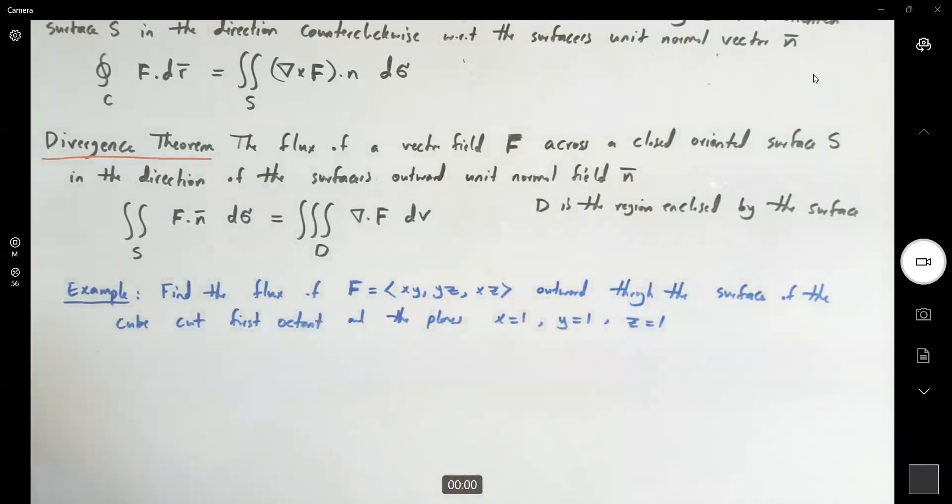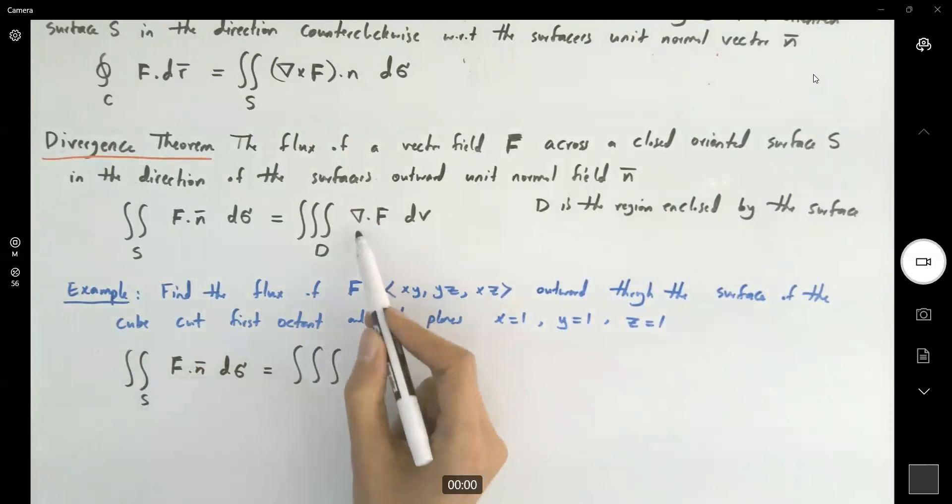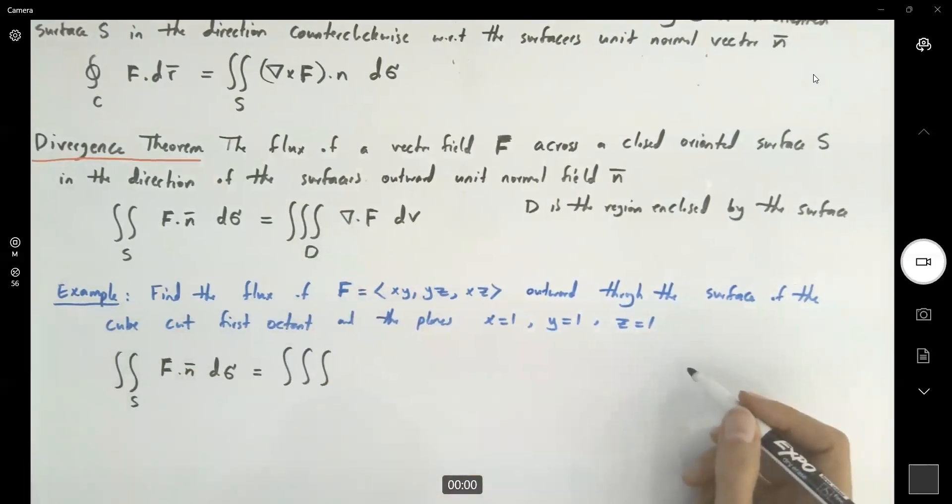Very good. So let us follow the theorem that we have here. The flux, f dot n dsigma over s, is equal to the triple integral of nabla dot f. So let us calculate nabla dot f first.